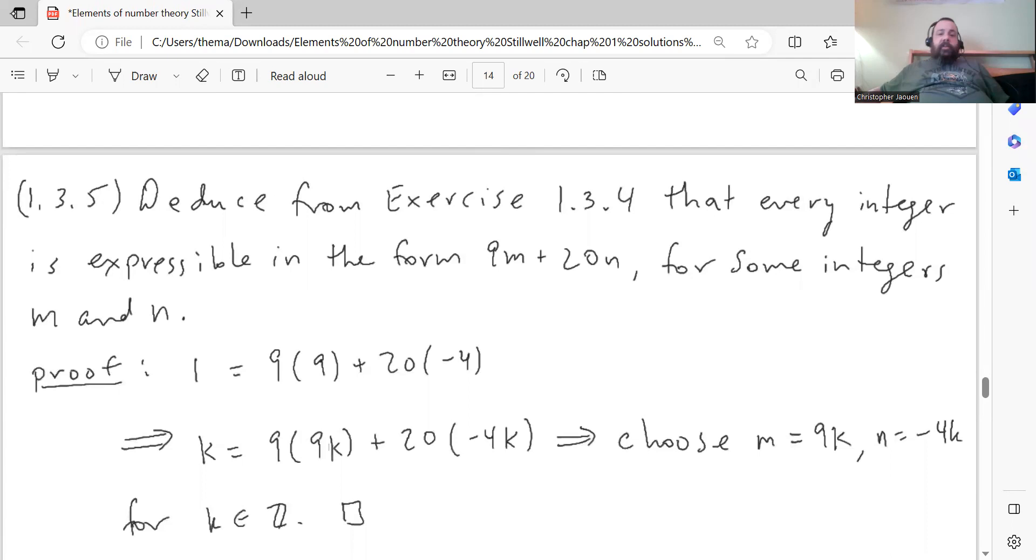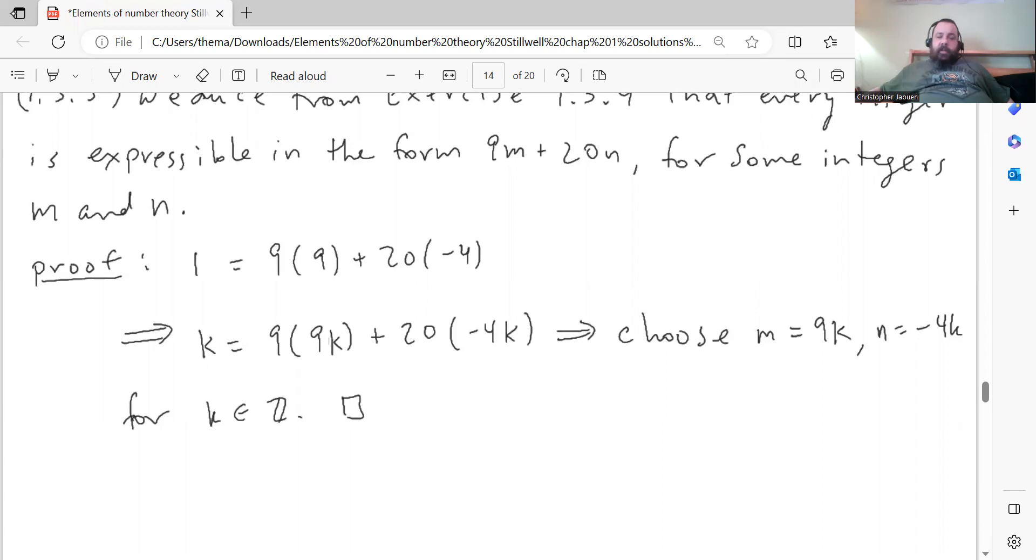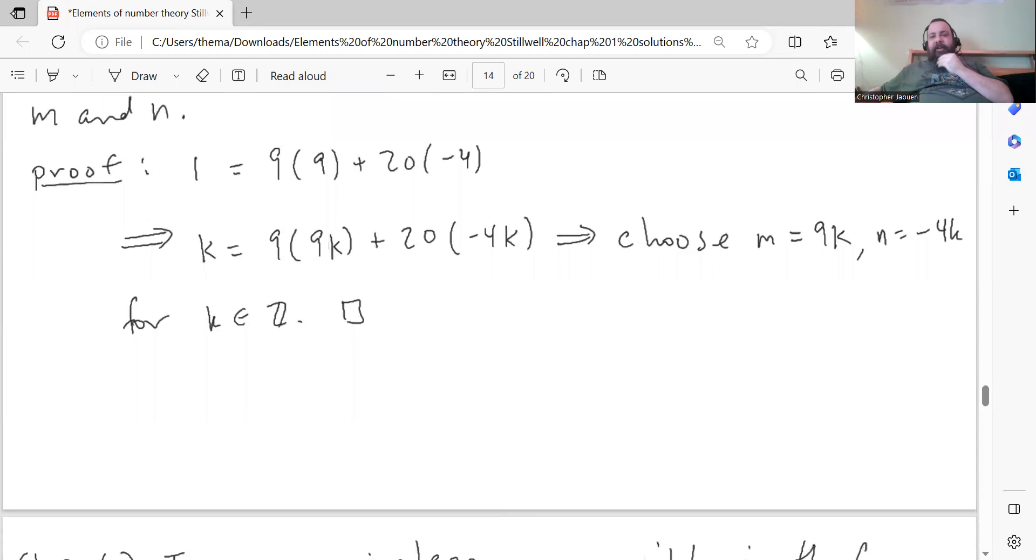Problem 1.3.5: Deduce from exercise 1.3.4 that every integer is expressible in the form 9m plus 20n for some integers m and n. Using the fact that you can write 1 as a sum of that form, if you want to represent the integer k in that form, you just multiply that first equation through by k, and that tells you what to pick. So you would choose m to be 9 times k, and n to be negative 4 times k, and that'll give you whatever number you want, as long as it's an integer.